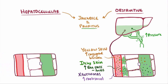In hepatocellular cholestasis, remember that both bile salts and conjugated bilirubin are made, they're just not excreted as well and can leak out, leading again to pruritus and jaundice. Xanthomas, though, are not as characteristic for hepatocellular cholestasis, since bile isn't leaking through the tight junctions like it was for obstructive cholestasis.